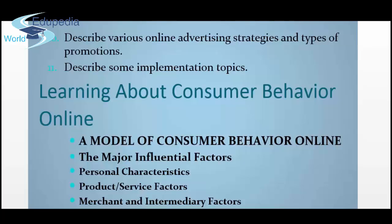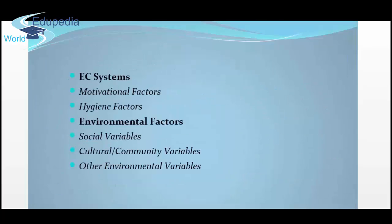Then we have learning about consumer behavior online — let's begin the chapter. The first topic is learning about consumer behavior online. We already have a model of consumer behavior. In this model we discuss the major influential factors: personal characteristics, product or service factors, merchant and intermediary factors. We also discuss electronic commerce systems, motivational factors, hygiene factors, and environmental factors including social variables, cultural community variables, and other environmental variables. Let's see how all these factors come into play when a customer looks at a product.